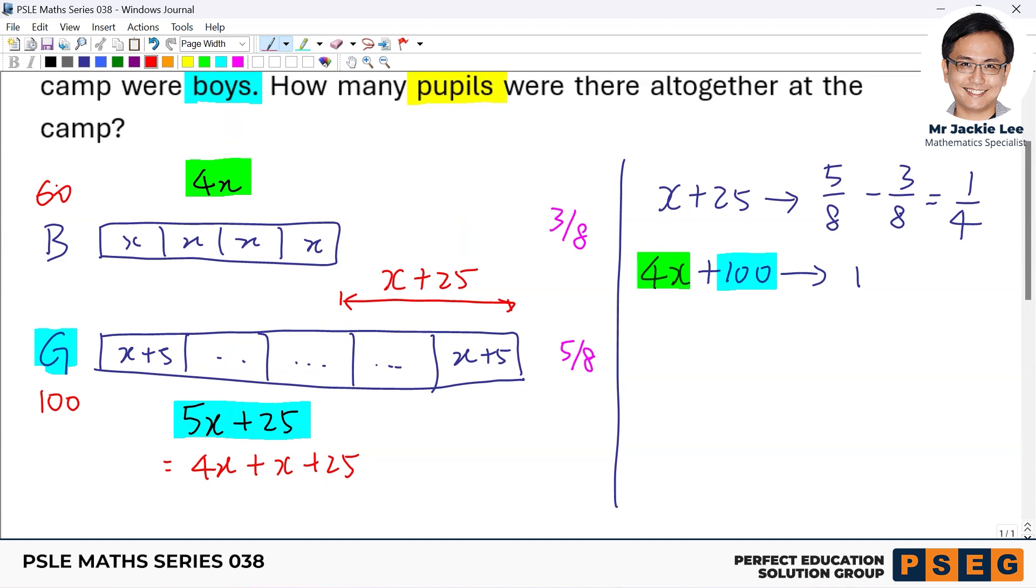So overall, they just ask for the total number of pupils there. So isn't that the final answer? Simply we have both figures already. Just simply this 60 and 100 add together. So answer therefore is 160.